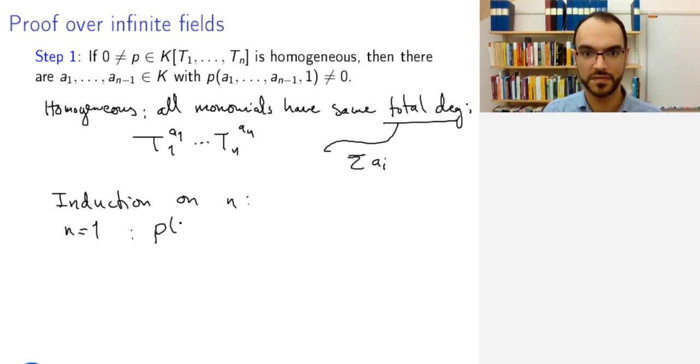So P of T1, this is just T1 to some power n, with the possibility that n is zero. So either this is a constant, non-zero, and then of course it doesn't vanish on one, or it is some power and then it doesn't vanish on one either. So P of one is not zero. Great.